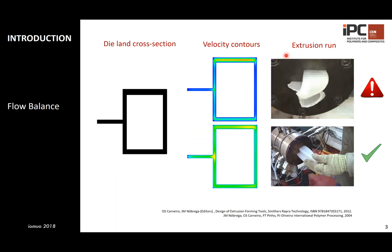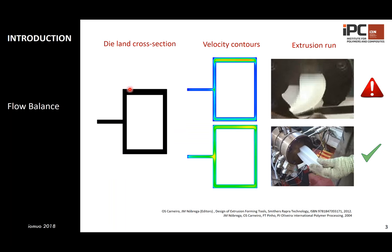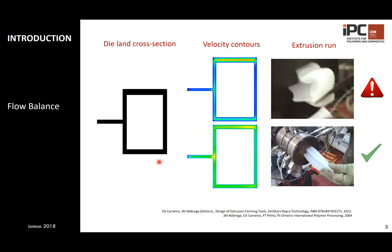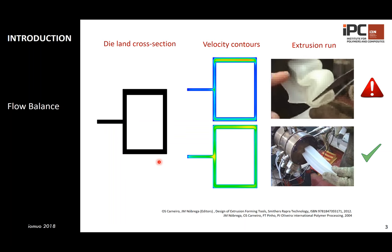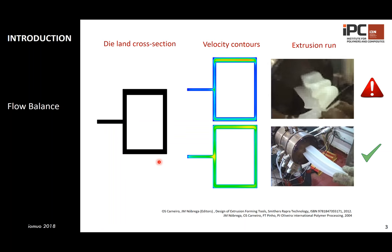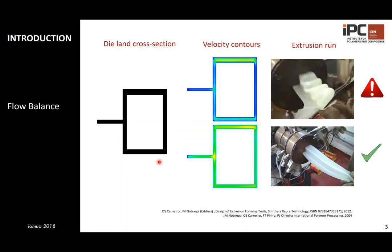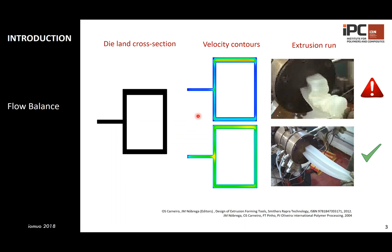Why is it important to properly design a profile extrusion die? A typical profile is illustrated on the left image, and it contains different thicknesses — thicker and thinner sections. The material tends to accumulate in the thicker sections, and when that happens, we cannot obtain the desired profile because the velocity distribution and the flow become unbalanced. What we'd like to do is design the tool and define the processing conditions to obtain a balanced flow distribution that will allow us to obtain the desired profile.